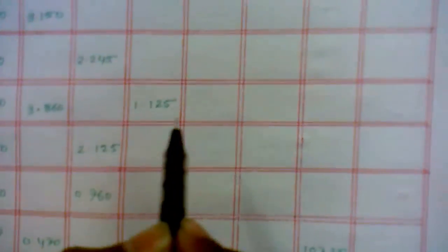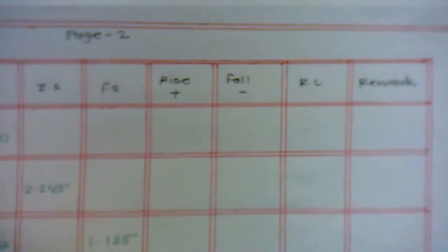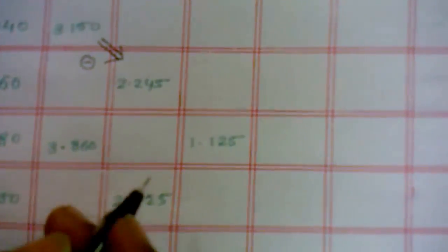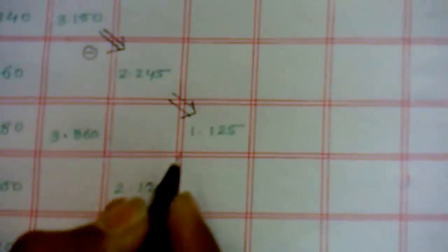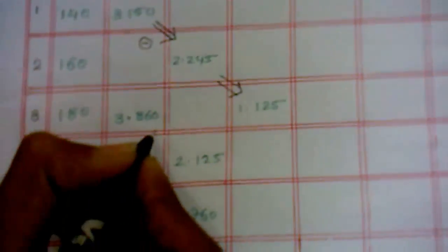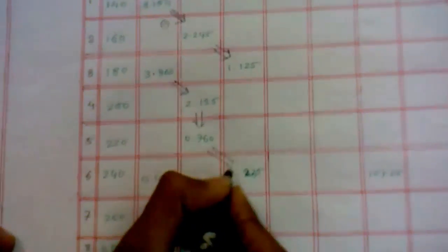Very interesting term here now, friends. Now in this step we are calculating the rise and fall of the RL. How is it calculated? Here see, 3.150 gets minus the term 2.245. So here, that means 3.150 minus 2.245. Then 2.245 minus 1.125. With the help of this we are getting the rise value or fall value. Then 3.860 minus 2.125, we are getting another value. Then 2.125, 0.760, we are getting another value. Then 2.235.